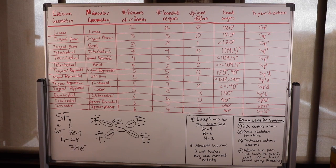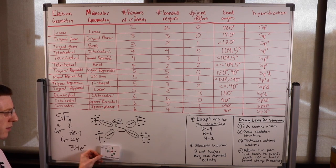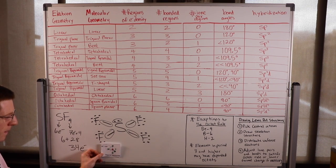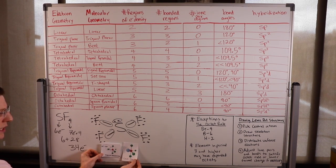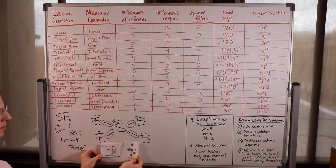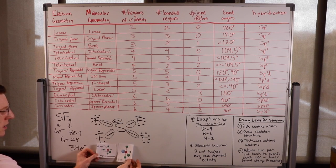The electron geometry started with five regions of electron density. Imagine we chopped off one bond here and turned it into a lone pair — now we have this seesaw shape. This lone pair pushes down on those bond angles, making them less than 120 degrees and less than 90 degrees.